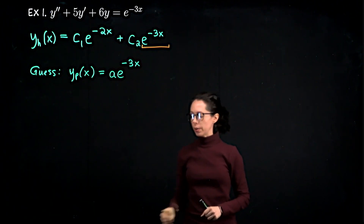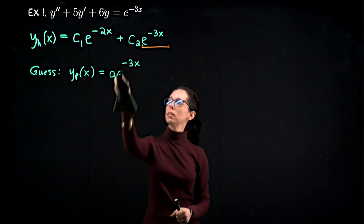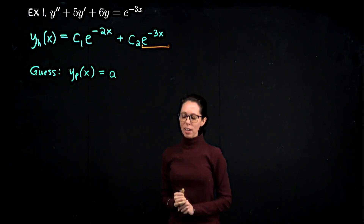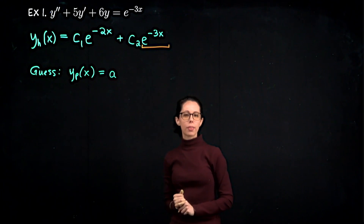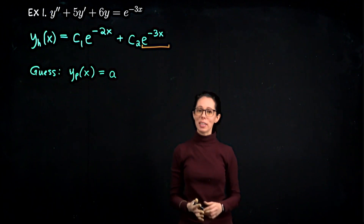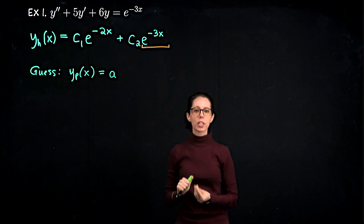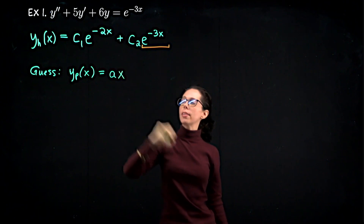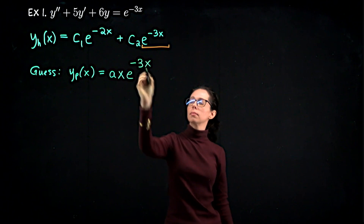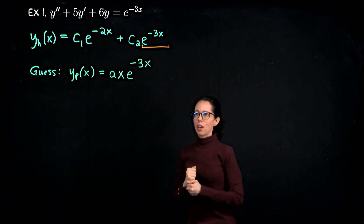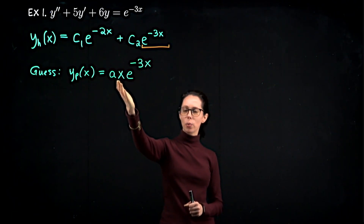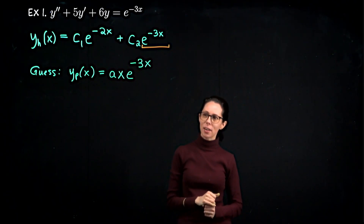What we need to do is adjust this. The adjustment is just like when we dealt with the situation where the roots of our auxiliary or characteristic equation were real and repeated — we picked up an extra coefficient of x. That's what we're going to do here. So let's try Ax·e^(−3x) as our guess. Just like when we had a repeated root, we grab an extra copy of x and see if it works.